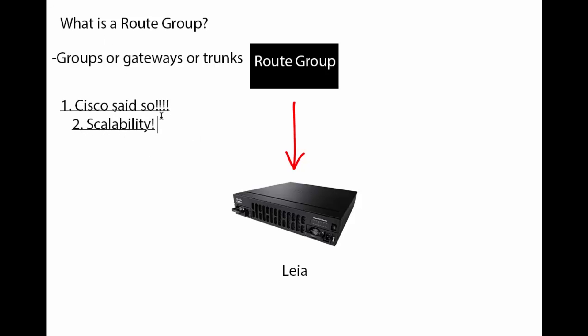This is huge. You want to make sure you do this. The third biggest reason is the route list. Route lists give you so much when you're configuring a path to the outside. If you're going route pattern directly to trunk or gateway, you lose a lot of the scalability and digit manipulation that you could put on a wider scale. And frankly, you can't do the route list thing without a route group, which is why it's important. Route group is there to group your devices however you need. So that's enough theory — let's get our hands dirty and get into call manager.